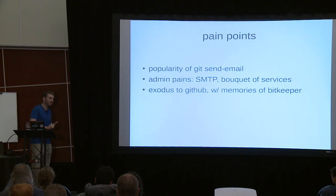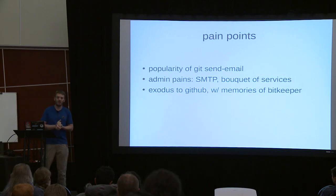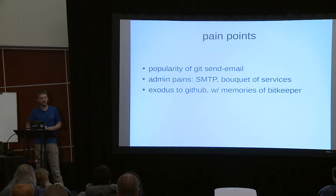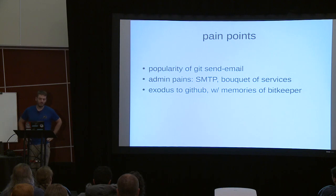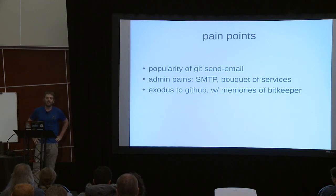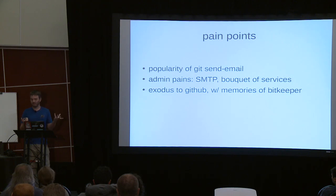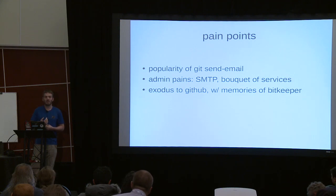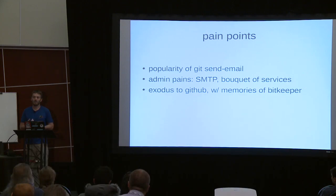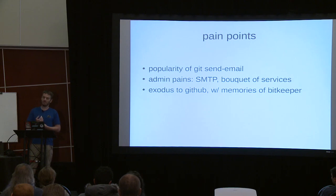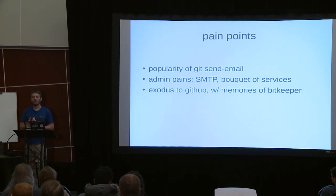What are the pain points with the current process — which in graphics we largely copy-pasted from the kernel with patch series iterating on the mailing list? One is the popularity of git-send-email. Kernel people have learned how sending emails works, but if you need to ramp up lots of new people — and graphics has been growing a lot — teaching and setting up git-send-email is not trivial. It's a barrier that annoys. Versus a more web-based workflow where you push branches and click buttons on a web page, which goes more smoothly through corporate firewalls.